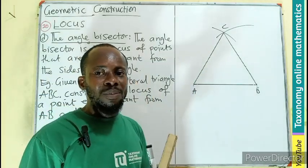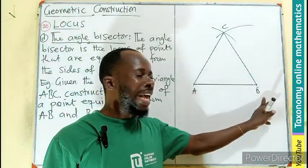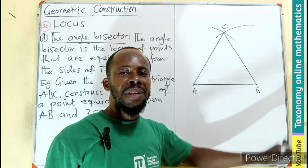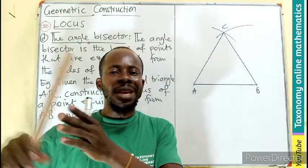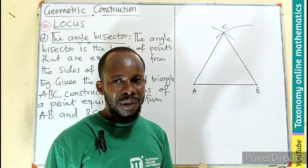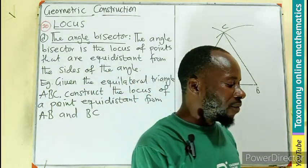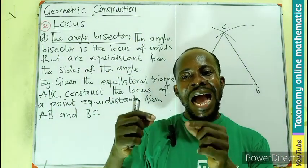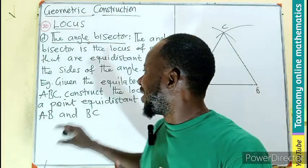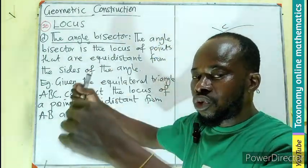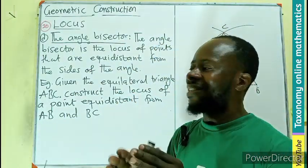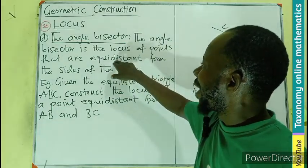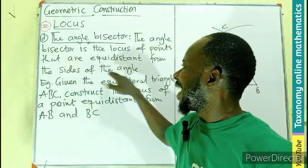We are looking for a line that will be equidistant from AB and BC. Any line you draw, the distance between that line and line AB and line BC should always be the same in all length. So you can see that in the question, we have not been told to do an angle bisector.